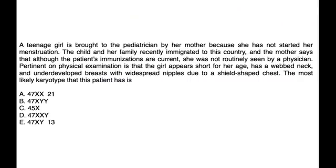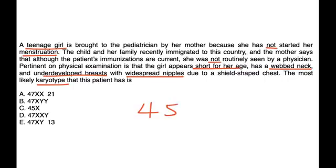Let's take a look at a few vignettes. A teenage girl is brought to the pediatrician by her mother because she has not started her menstruation. The child recently immigrated and was not routinely seen by a physician. On physical examination, the girl appears short for her age, has a webbed neck, underdeveloped breasts, and widespread nipples due to a shield-shaped chest. The most likely karyotype is 45XO — this is a classic presentation of Turner Syndrome. The answer is C.